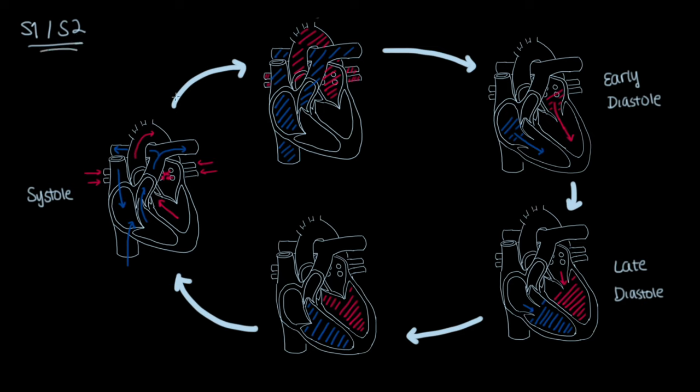Here, I have drawn out the cardiac cycle with systole here and diastole here. As the heart transitions from diastole to systole, the blood is mainly in the ventricles as the ventricles start to squeeze. As the ventricles squeeze, the blood in the ventricles pressurizes and pushes onto the neighboring valves.